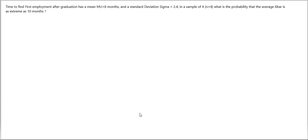In this example, we have a variable called 'time to find first employment after graduation.' That variable has a mean μ and a standard deviation σ equal to 2.4 months. In a sample of four individuals (n=4), what is the probability that the sample average X̄ is going to be as extreme as 10 months?